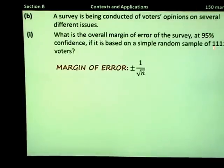The margin of error is calculated using plus or minus 1 over the square root of n. If we substitute in 1,111 for n, this gives plus or minus 0.03 as a decimal. However, we can also write that as a percentage. Multiplying by 100, this would be plus or minus 3%. So your margin of error here is plus or minus 3%.